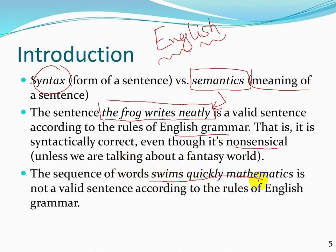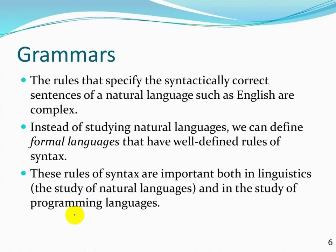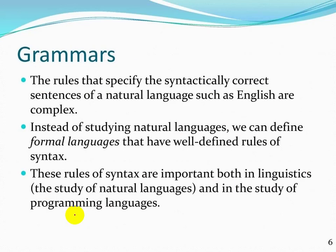In English grammar, a valid sentence should be subject, then helping verb, then main verb, then object. This is the basic understanding of the English language. We use syntax and semantics to understand how we read a sentence. When we go to the English language, we learn grammar — the rules such as subject, helping verb, main verb, then object. We use adjectives in superlative form, comparative form — all these things we discuss in grammar. The rules that specify syntactically correct sentences of a natural language such as English are complex.